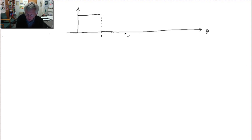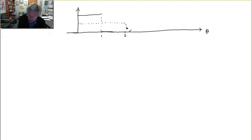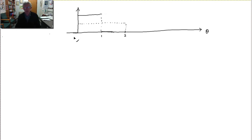If theta was 2, then the density would be uniform on 0 to 2. What happens is it's spread out over a wider interval, so it only has half the height. The area is one half times 2, and it still has an area of 1.